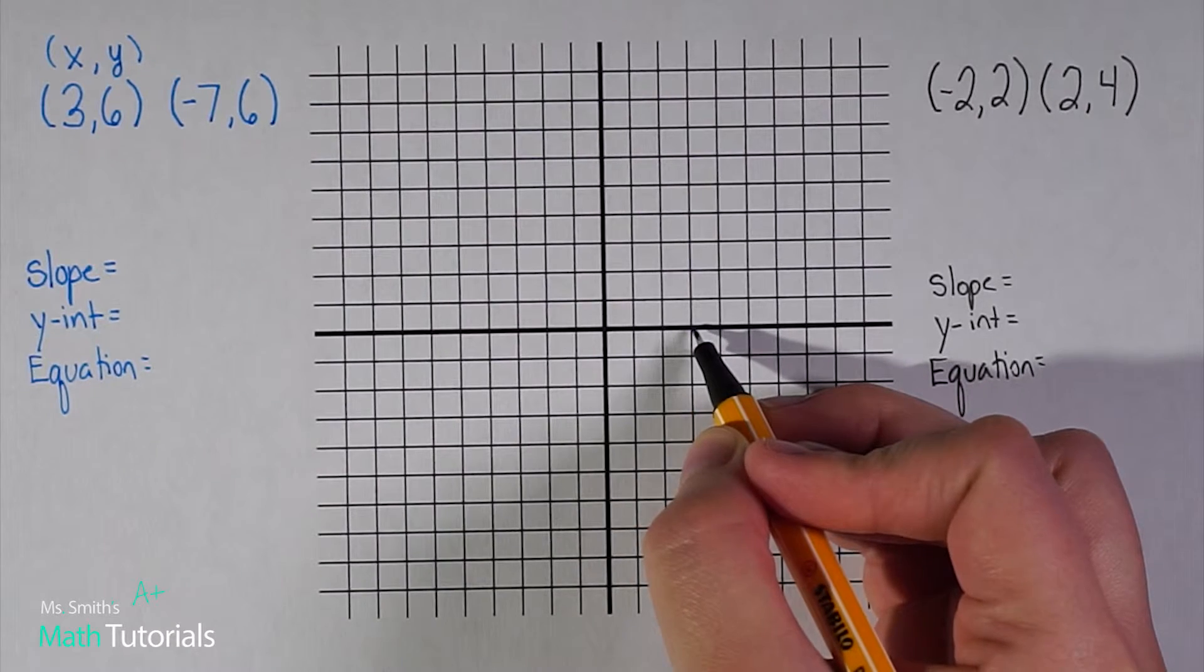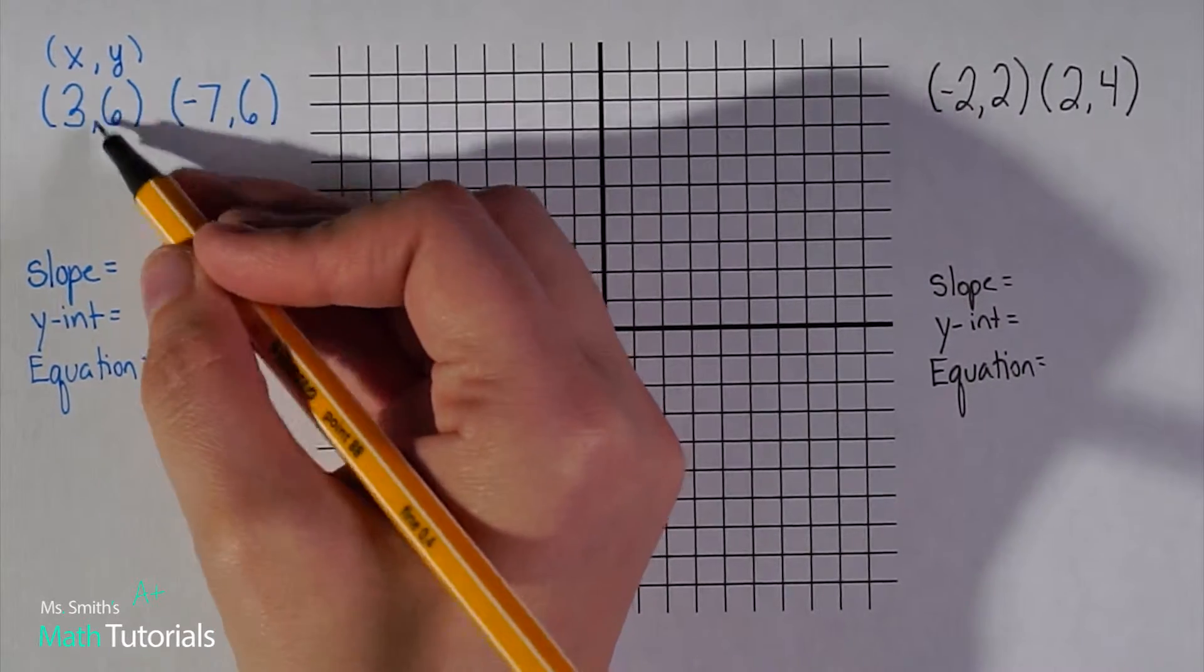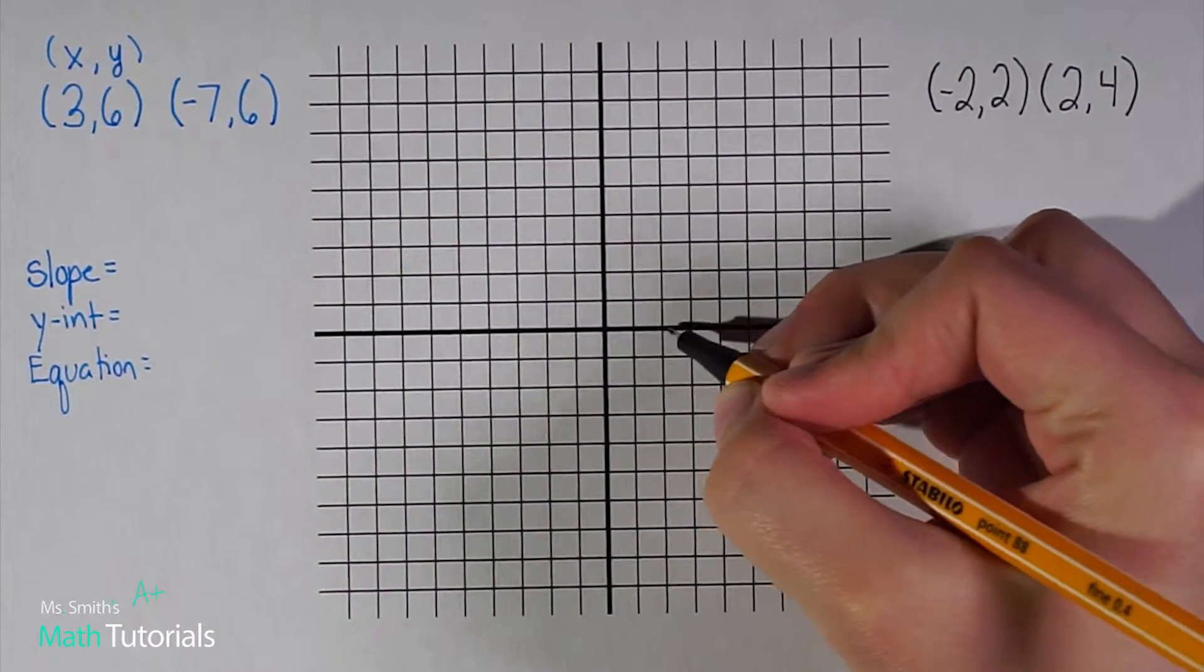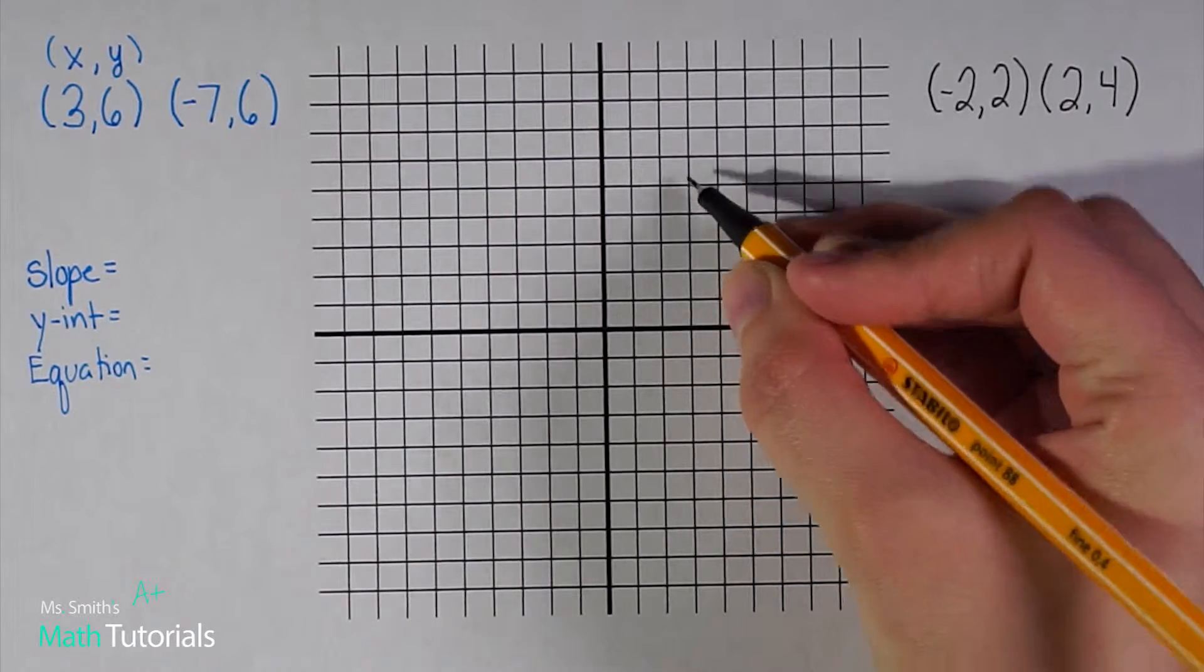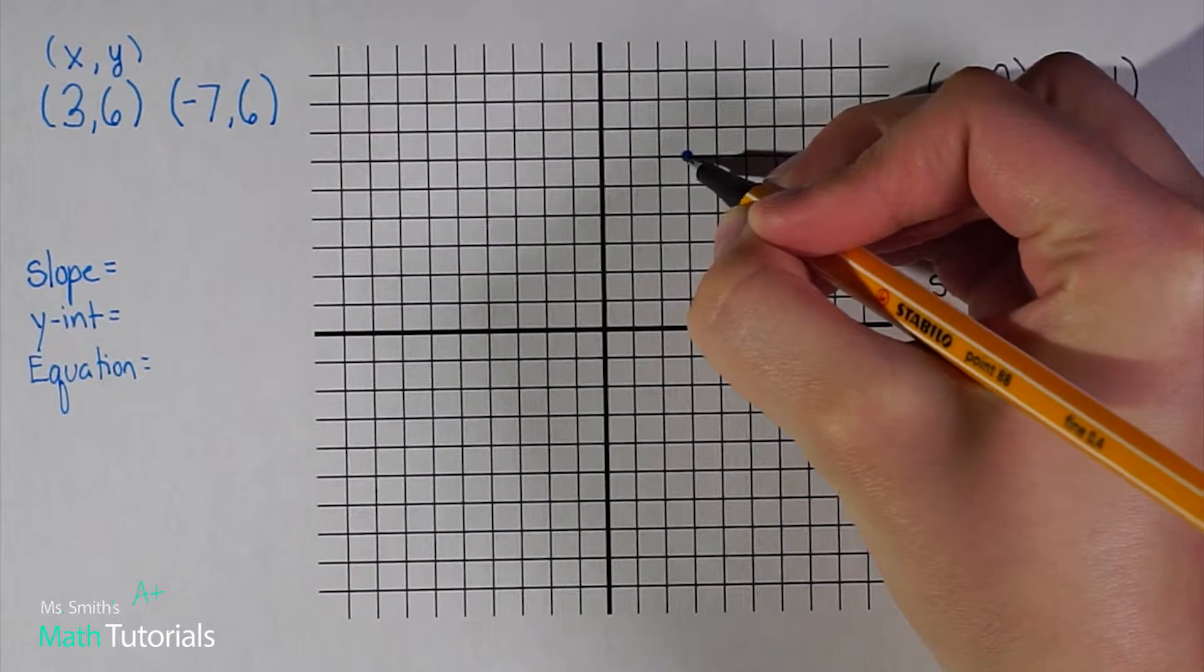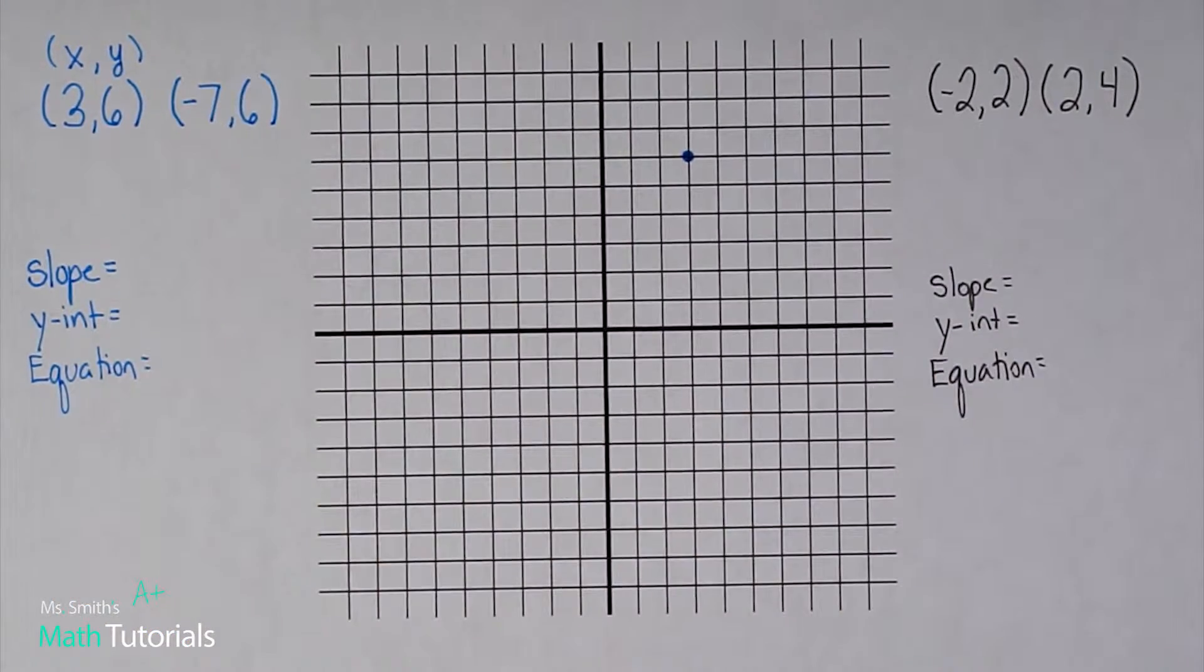Then it wants me to count up on my y-axis positive six. I'm moving up because six is positive. So I went one, two, three for my x. Now one, two, three, four, five, six. There's my first point, three six on my graph.